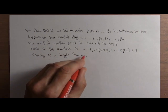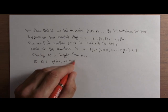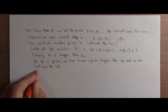Clearly, N is bigger than pn. So if N happens to be prime, we found a prime number bigger than pn, and we can continue the list.